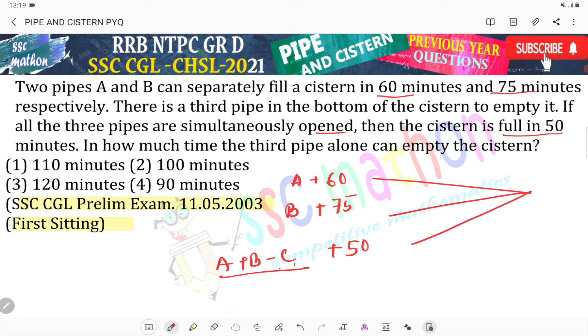So total time is how much? LCM of 60, 75, and 50 is 300.